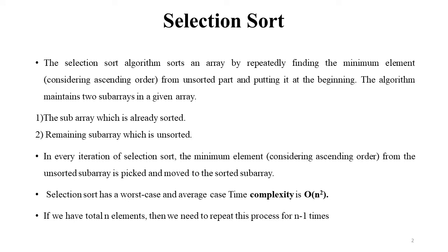In selection sort, we first select the minimum element — the smallest element in the array — and exchange it with the first index element. Then we divide the array into two sub-arrays: the first part is the sorted array and the second part is the unsorted array. In every iteration, the minimum element from the unsorted sub-array is picked and moved to the sorted sub-array. The worst case and average case time complexity is O(n²). If we have n elements total, we need to repeat this process n-1 times.